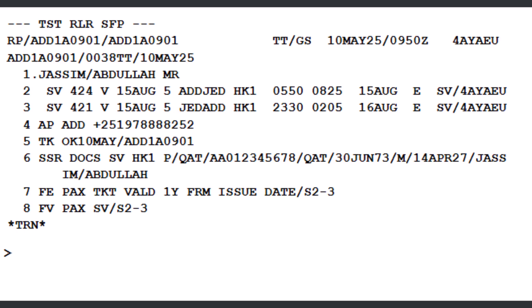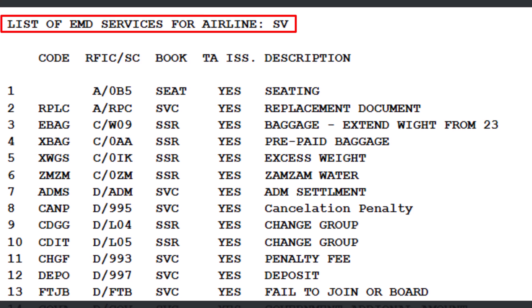To display the list of EMD services offered by a specific airline, like Saudi Airlines, enter the command EGSD slash VSV, then press Enter. The system now displays the list of EMD services provided by Saudi Airlines.